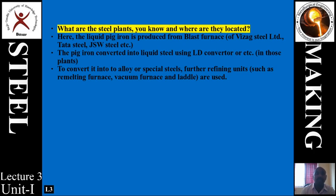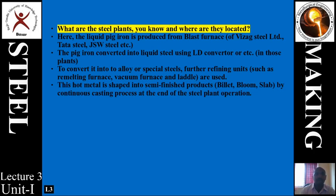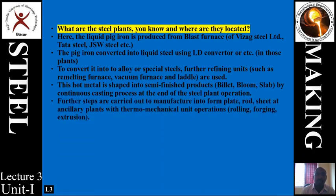These refining units play a very important role in steel plants. Steel is shaped into semi-finished products — billet form, bloom form, and slab form — produced using continuous casting operations, which is the end process of the entire steel plant. These semi-finished products are further processed using manufacturing units called ancillary plants, located in and around the steel plants, using thermomechanical unit operations such as rolling, forging, and extrusion, producing plates, rods, and sheets.